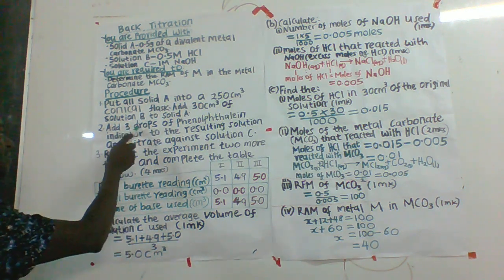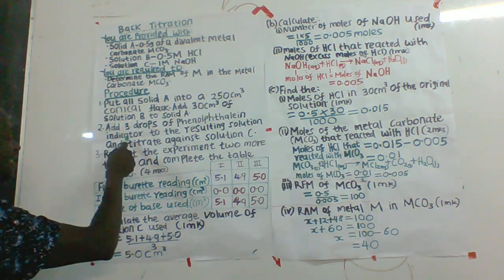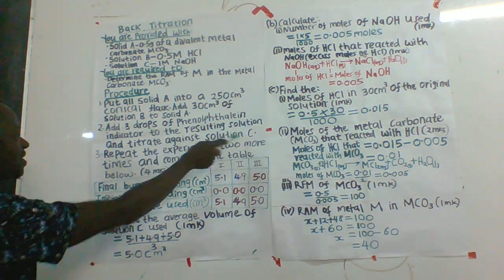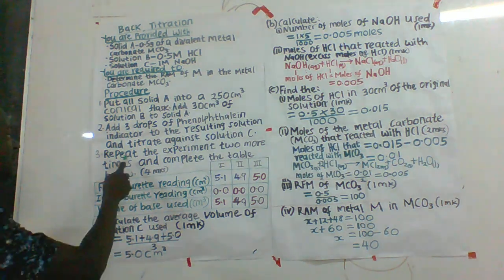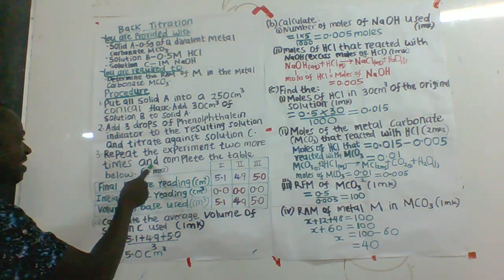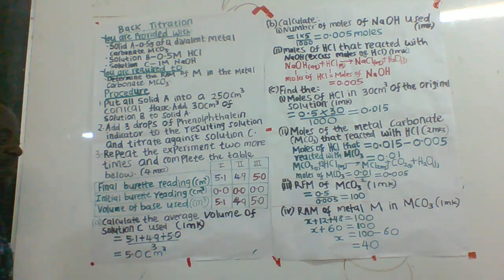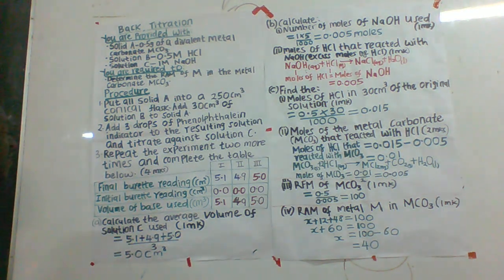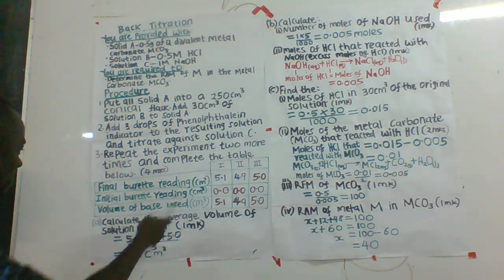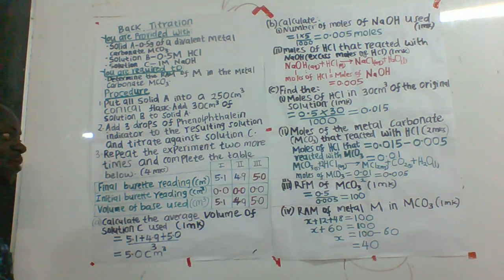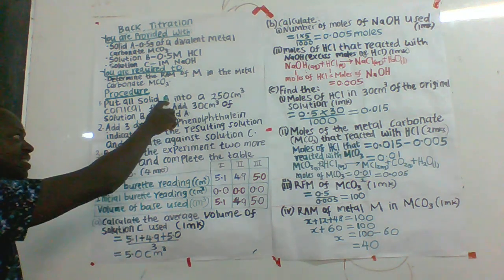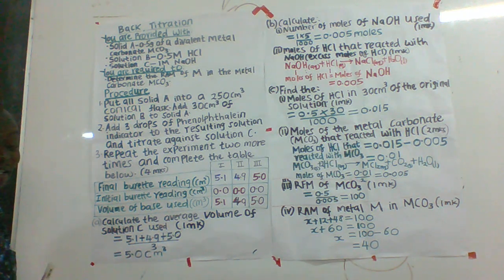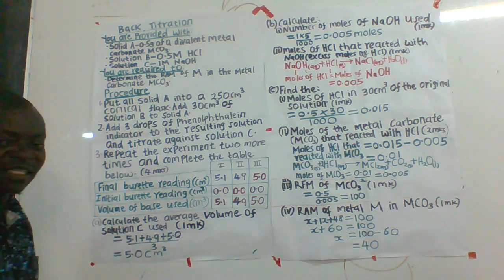Then add 3 drops of phenolphthalein indicator to the resulting solution and titrate against solution C. Then repeat the experiment 2 more times and complete the table below. Before we discuss how the table is completed, I want us to have a clear understanding of what is happening in this procedure and how the reactions are going to take place.